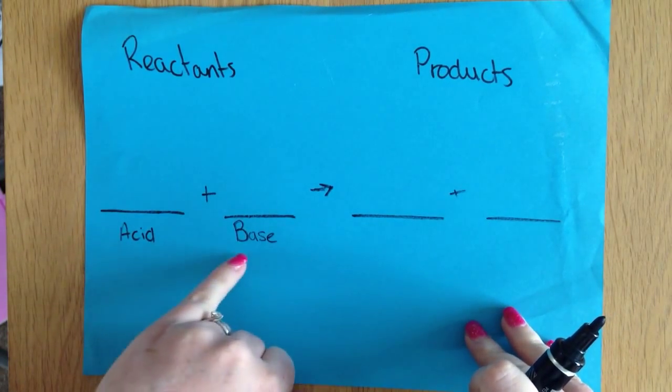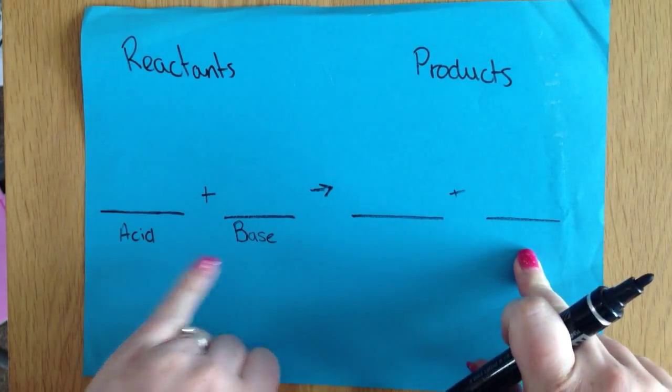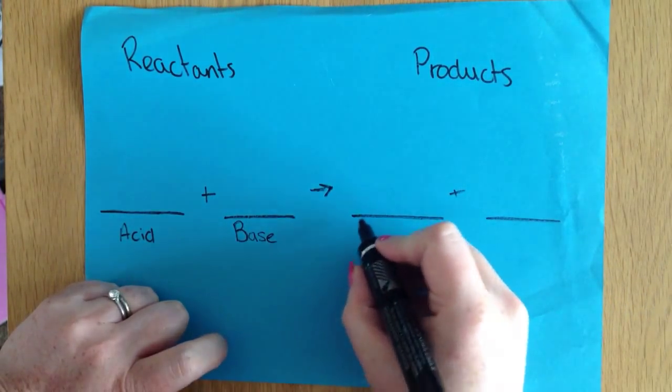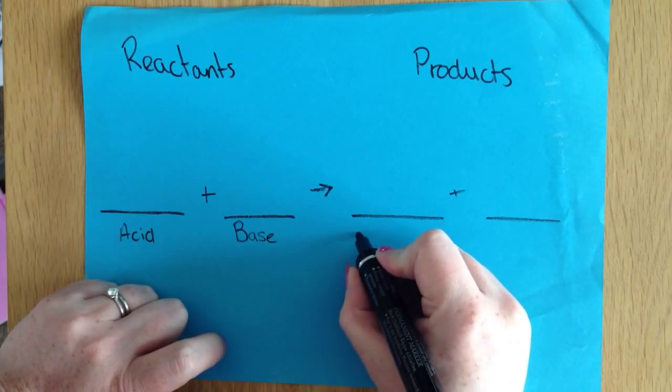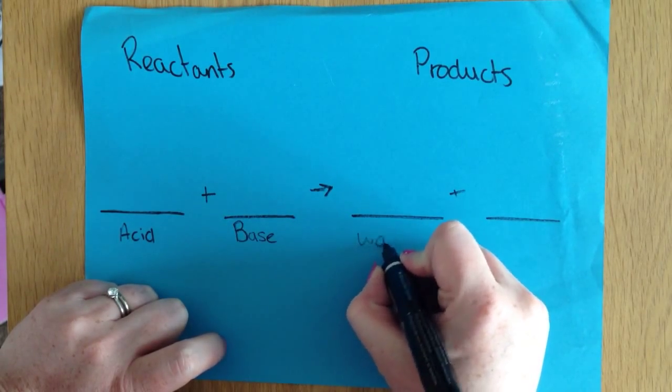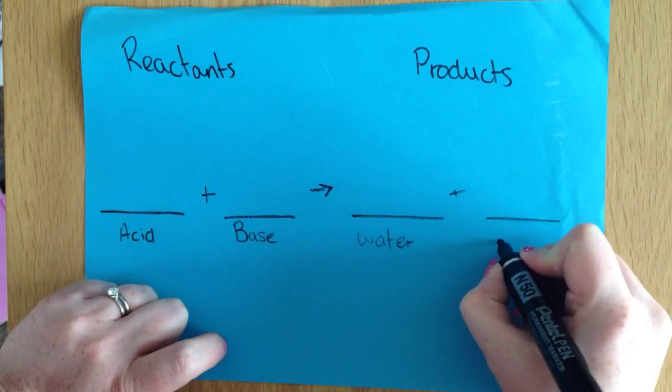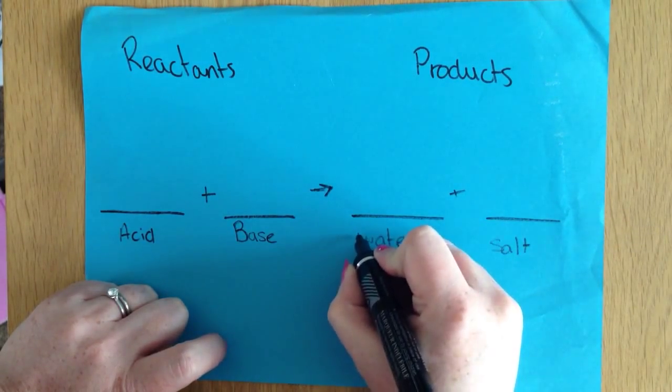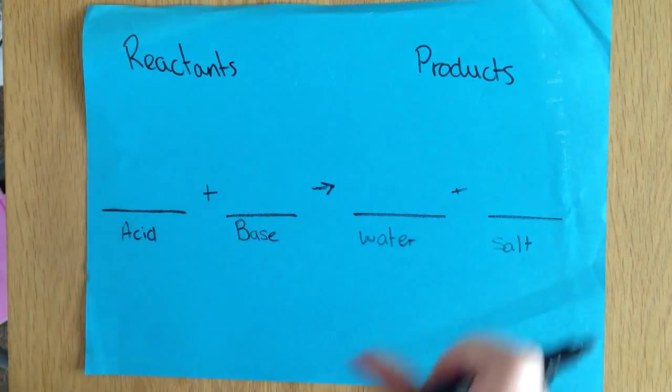Here we're going to be looking at acid and base reactions, what's produced and how you can look at a reaction and know what's produced. The first thing that is good to remember is that when you react an acid and a base, you're going to get water and a salt out of it. So those are the two things that we're looking to have in our reaction.